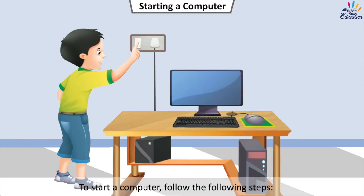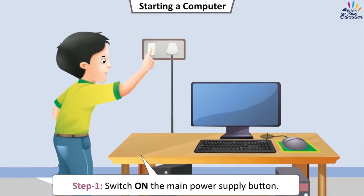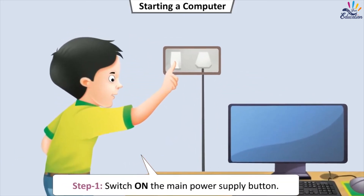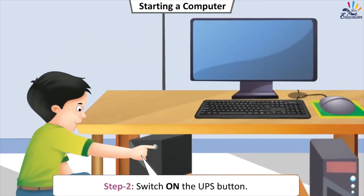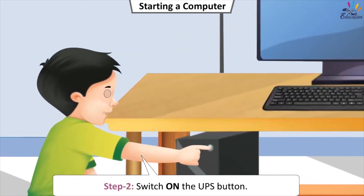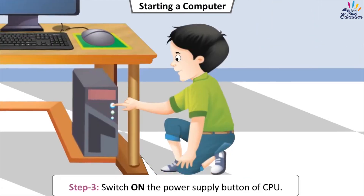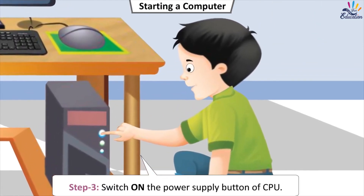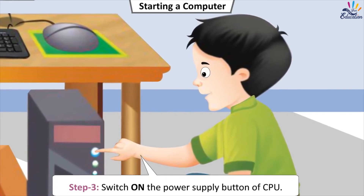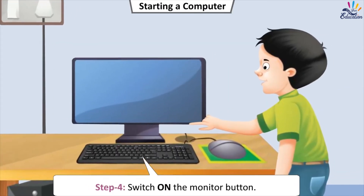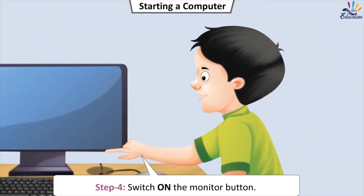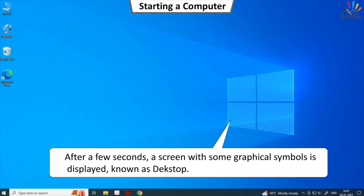To start a computer, follow these steps. Step 1: Switch on the main power supply button. Step 2: Switch on the UPS button. Step 3: Switch on the power supply button of CPU. Step 4: Switch on the monitor button. After a few seconds, a screen with some graphical symbols is displayed, known as the desktop.